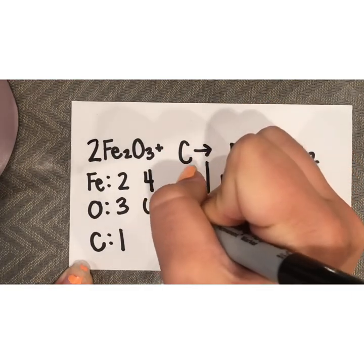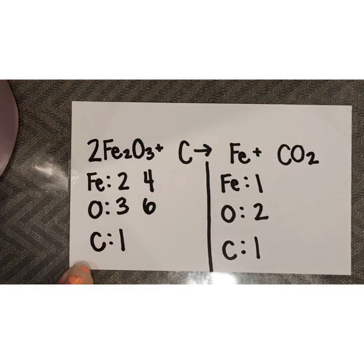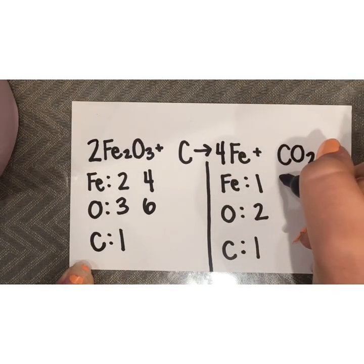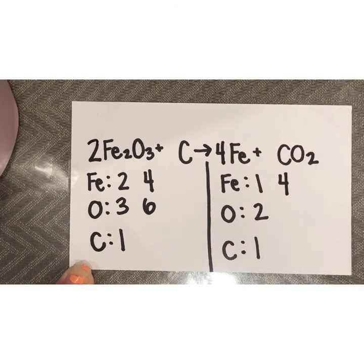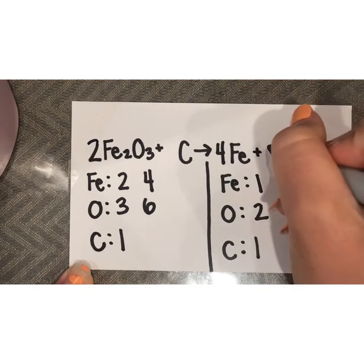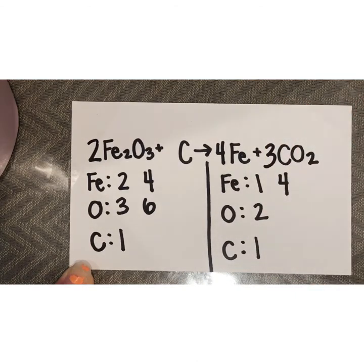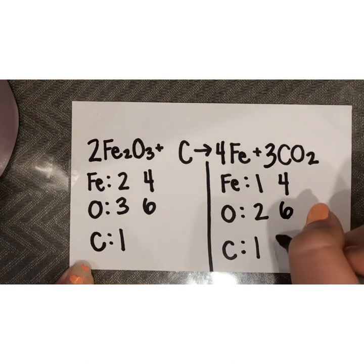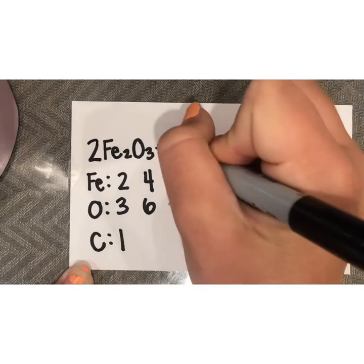Since I added a 2 in front of the Fe2O3, I write in how many I have next to the previous numbers. There are four irons and six oxygens, so I go to the other side to make it equal. Lastly, we have three carbon atoms on the product side, so we need three on the reactant side. Make sure all the numbers match up and it's balanced.